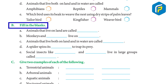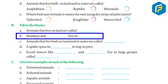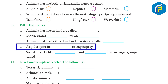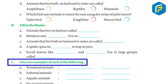Exercise Part B — Fill in the blanks. A: Animals that live on land are called terrestrial. B: Monkeys and chimpanzees live on trees. C: Animals that live both on land and in water are called amphibians. D: A spider spins its web to trap its prey. E: Social insects like honeybees and wasps live in large groups called colonies.